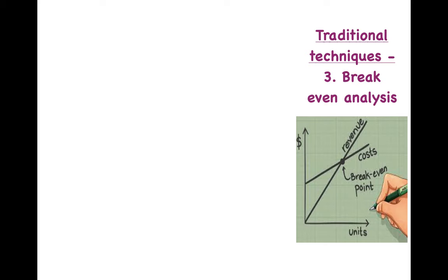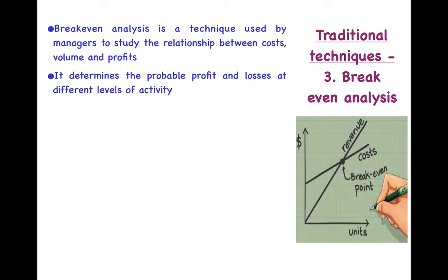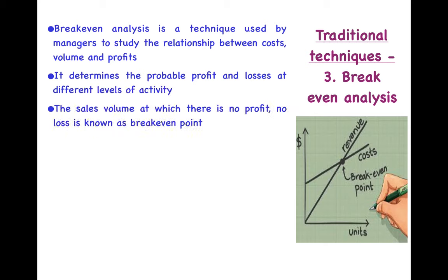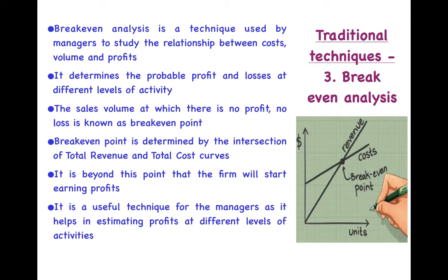The third technique is break-even analysis. Here you can see the graph of break-even analysis, which represents the cost and revenue lines. The x-axis represents volume and the y-axis represents cost and profit. The intersecting point — where the revenue and cost lines meet — is known as the break-even point, where there is no profit and no loss. This technique is used by managers to study the relationship between cost, volume and profits. Beyond the break-even point the firm starts earning profits, and below it there are losses. It helps in estimating profits at different levels of activity and hence helps in the control of various resources.